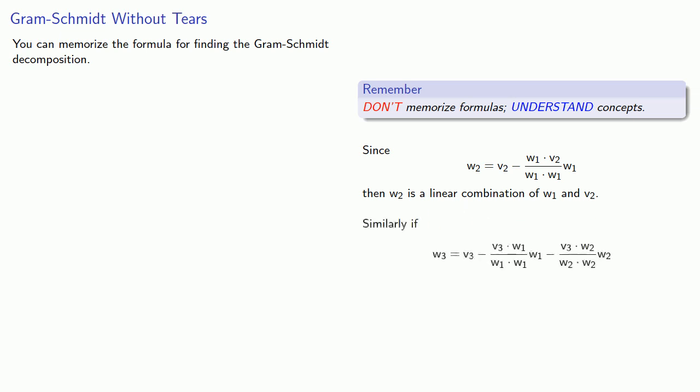Similarly, we have our formula for w3, but this means that w3 is a linear combination of w1, w2, the first two orthogonal vectors in our new basis, and v3, the vector we're replacing in the original basis.